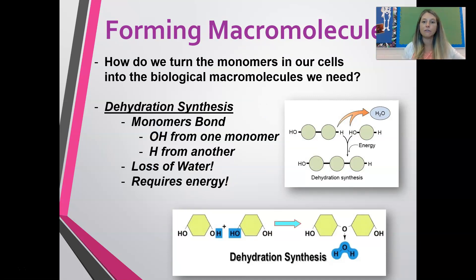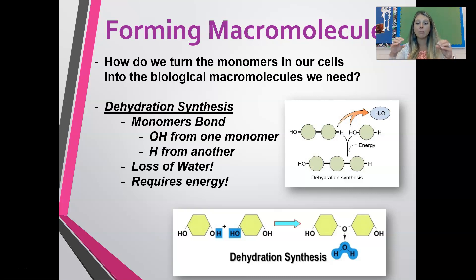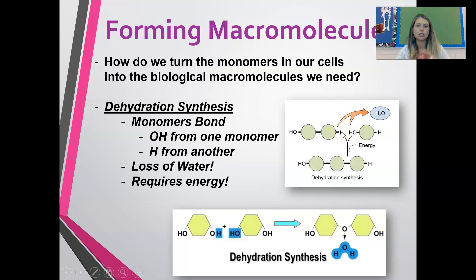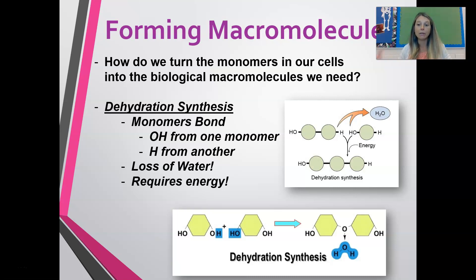You need to be able to break macromolecules down and build them back up. The way you build macromolecules is by putting together those little subunits through a process called dehydration synthesis. You are bonding monomers to each other — to expose bonds, you take an OH from one monomer and an H from the other, making a water molecule. So you are removing a water molecule in order to bond those monomers together — that's why it's called dehydration synthesis. This process requires energy.